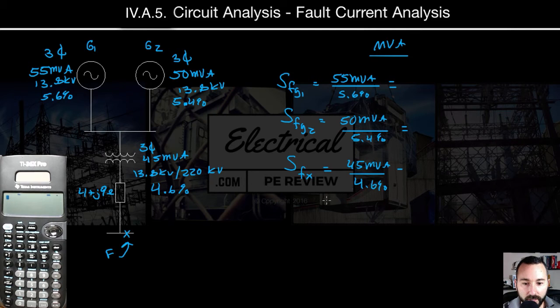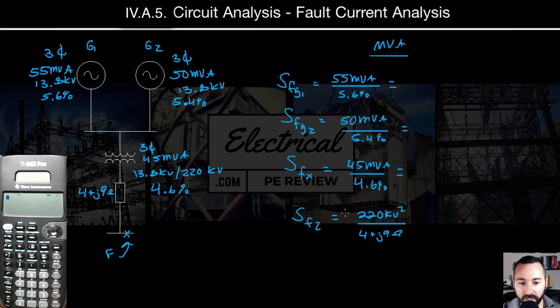And then last, our line impedance, we'll call that SFZ. That's going to be the voltage at the impedance is 22 kV. So 22 kV squared divided by the impedance in ohms, 4 plus J9 ohms. And again, this is just the apparent power formula, which just says power is equal to V squared over Z. That's all that is.